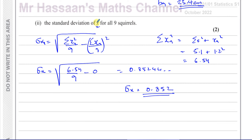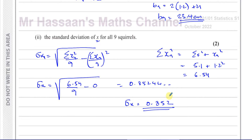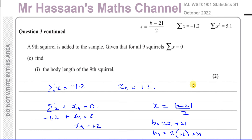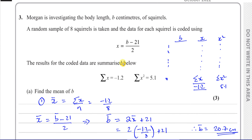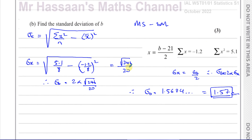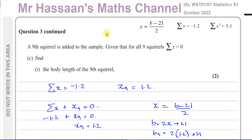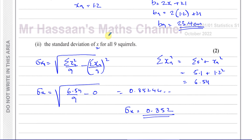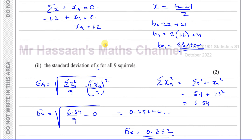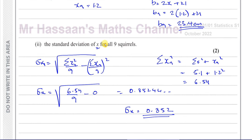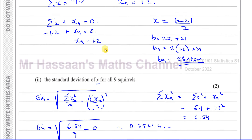They want the standard deviation in terms of x, not b, so we don't need to undo the coding — and that's the answer to this question. According to the examiner's report, this question was very poorly answered by most students, probably because coding is a topic many haven't studied thoroughly. It's important to look at all your notes and the full syllabus, not just past papers, because sometimes questions come up that are different from what you've practised.